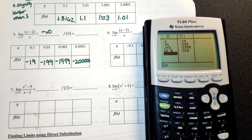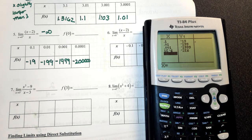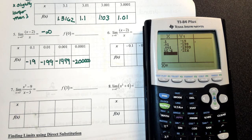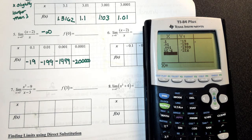We just got done studying rational functions. Graphically, at x equals 0, you have a vertical asymptote — because when you have 0 in the denominator, it's undefined. Remember what happens with a vertical asymptote: the graph is going to go up toward positive infinity or down toward negative infinity.